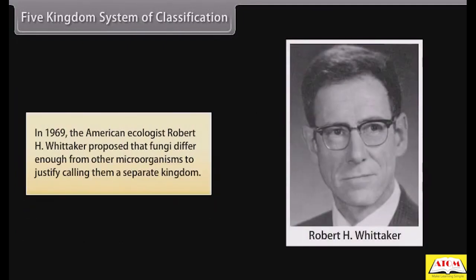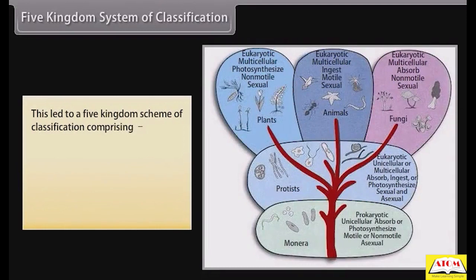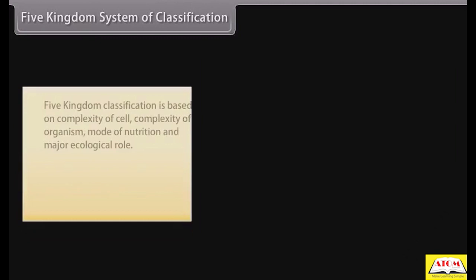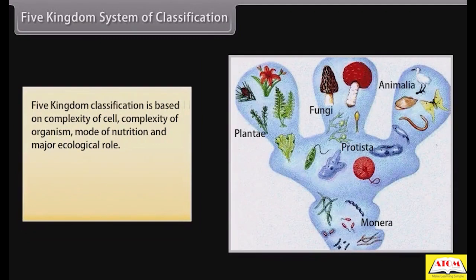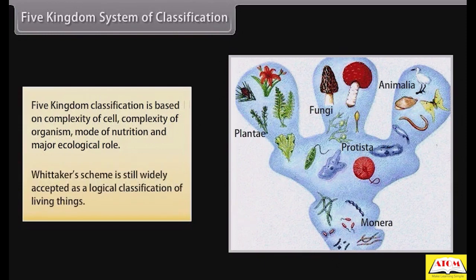Five Kingdoms System of Classification: In 1969, American ecologist Robert H. Whittaker proposed that fungi differ enough from other microorganisms to justify calling them a separate kingdom. This led to a Five Kingdom Scheme comprising Monera, Protista, Fungi, Plantae, and Animalia. The Five Kingdom Classification is based on complexity of cell, complexity of organism, mode of nutrition, and major ecological role. Whittaker's scheme is still widely accepted as a logical classification of living things.